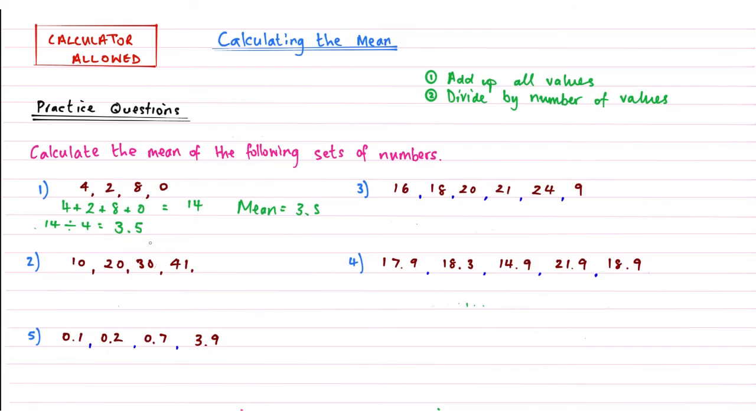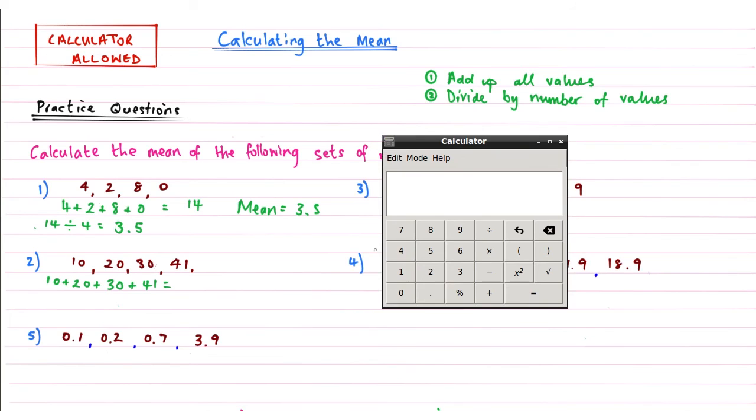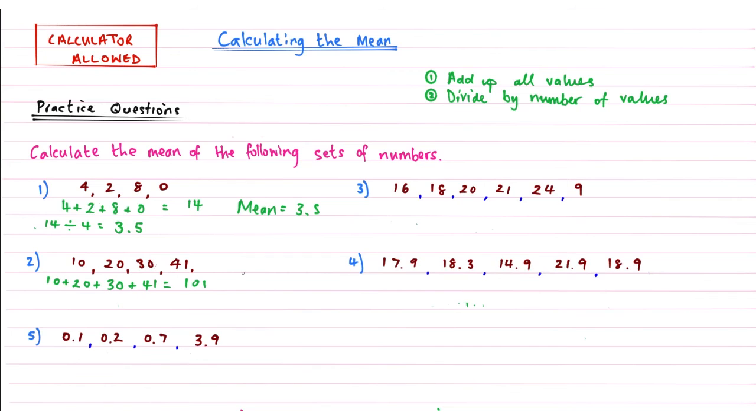So if we have a look at question 2, again, we're adding up all these values. So 10 plus 20 plus 30 plus 41. And to speed up the process, let's get our trusty calculator out again. So 10 plus 20 plus 30 plus 41, that gives me a total of 101.